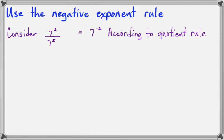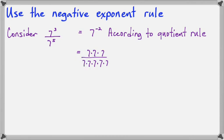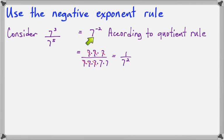But you can also think of it this way. 7 to the 3rd is 7 times 7 times 7, and if I put 7 to the 5th in the denominator, we know that any 7 divided by 7 makes 1. So that pair of 7s crosses out, and the next pair, and the next pair, and so I'm left with two 7s in the denominator, and we could write that as 1 over 7 squared. So we see that 7 to the negative 2 is the same as 1 over 7 squared.